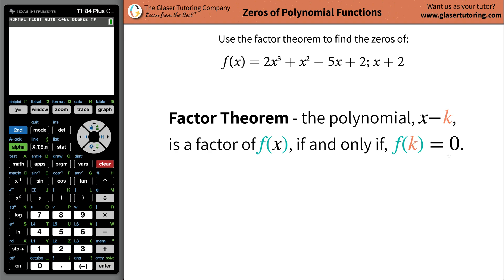if and only if the function's value evaluated at the value of k is equal to zero. Now, if your mind went numb, don't worry, so did mine. Basically, what we have to do is we have to look at this factor and we have to find k. Now, in order to find the value of k, you have to set it up in this form.